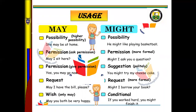Another modal verb: MAY and MIGHT. May is when you express higher possibility. They are similar, but may represents about 90% probability and might is about 80%. May is possible when you speak about possibility, permission, request, and wish. Might is the same but more formal.